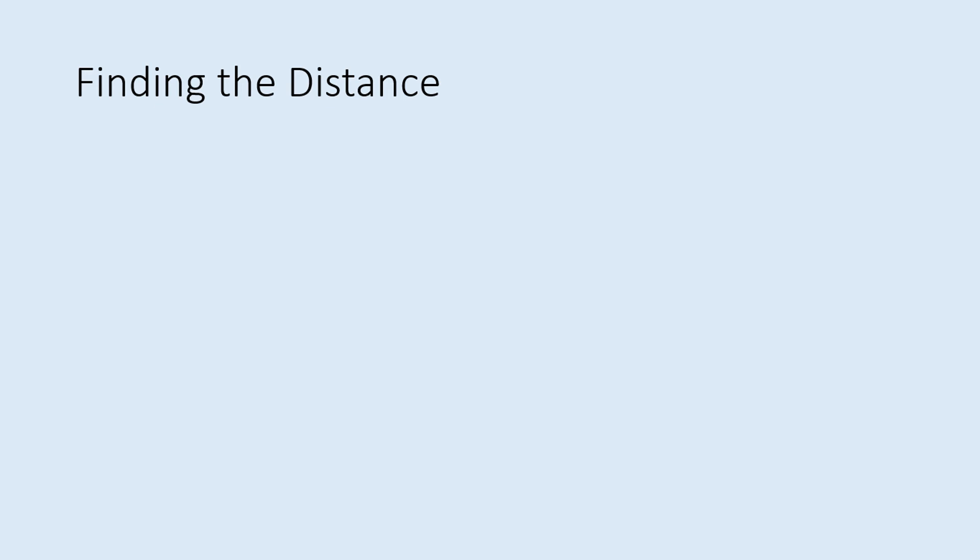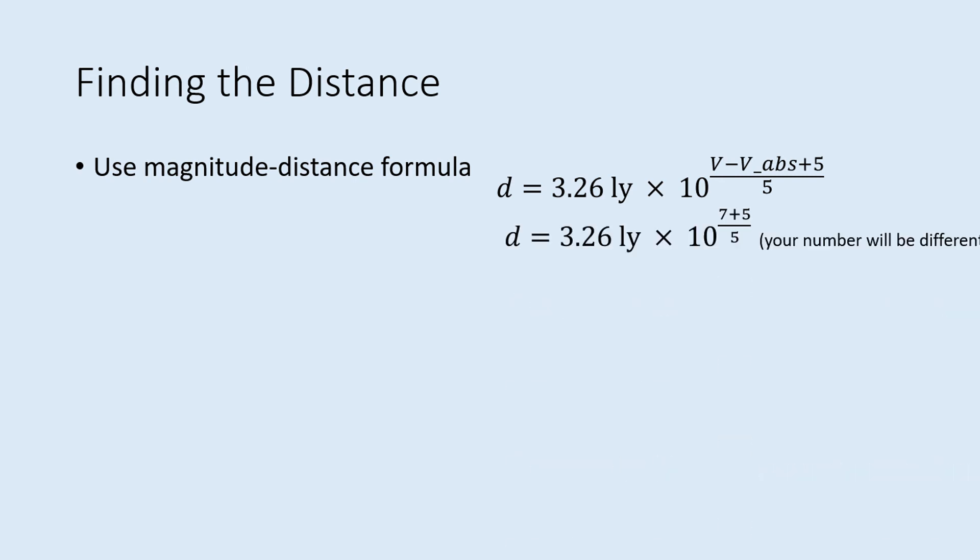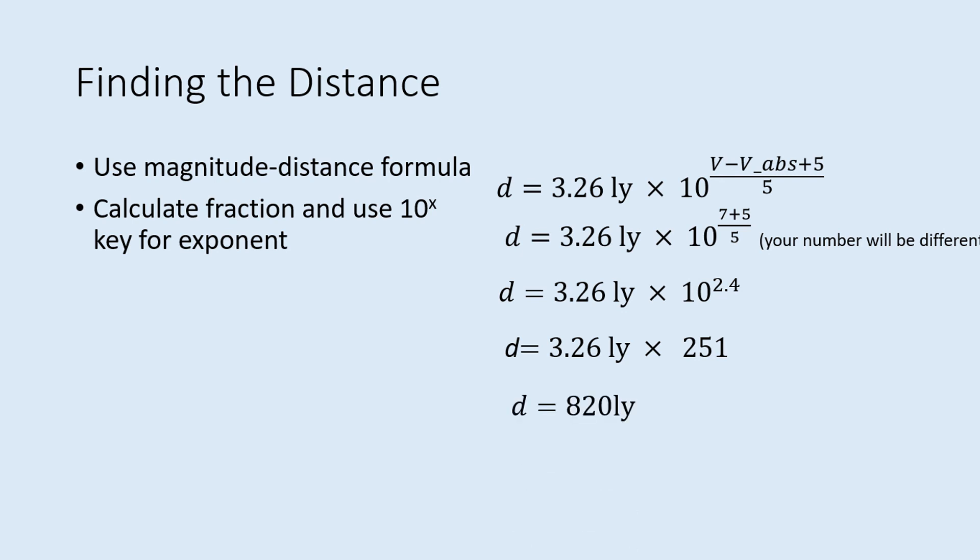Once you've found the distance modulus, you can use this to find the actual distance to the cluster. Use the second equation in this section of the lab. This is a variation on the magnitude distance formula we've used in the lecture. Put in the average distance modulus for V minus V abs. Calculate the fraction in the exponent, then use the 10 to the x key and multiply the result by 3.26 to turn the distance into light years.